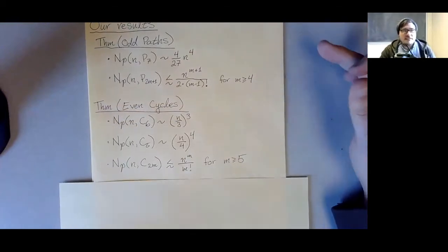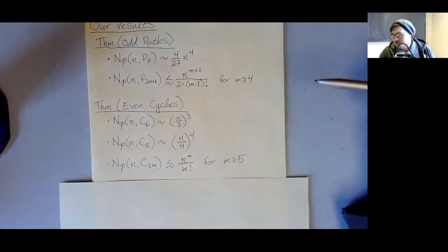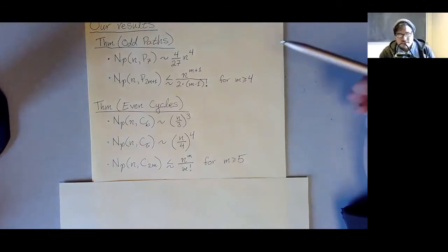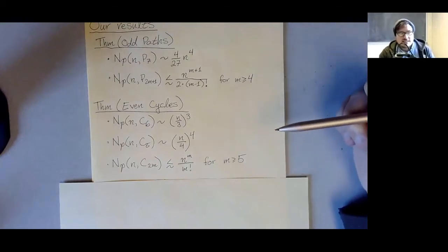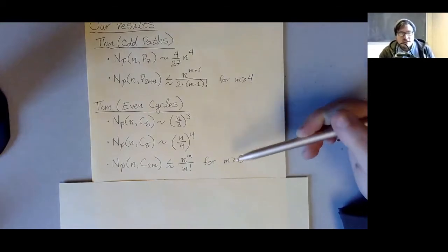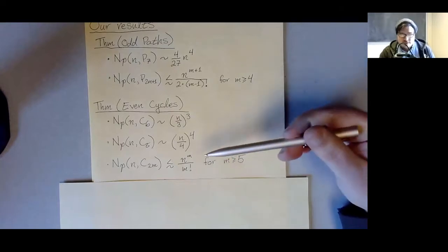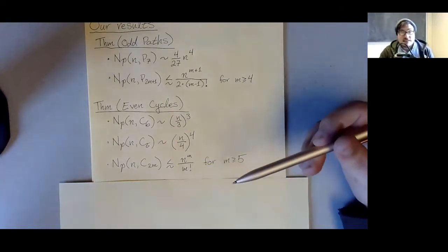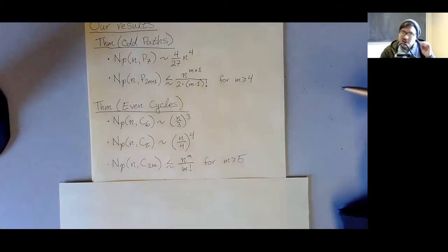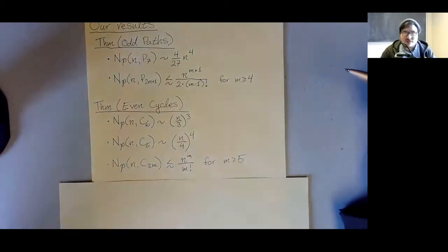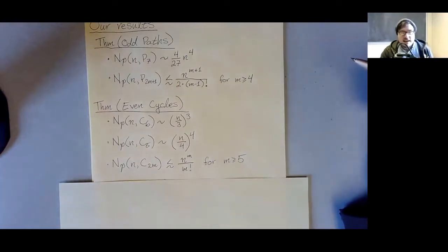When it comes to even cycles, Hakimi and Schmeichel already figured out the 4-cycle. So we figured out the next two cases: 6-cycles and 8-cycles, and significantly improved the upper bound for even cycles in general. Again, the order of magnitude of n^m is actually very simple and any of you could prove it quickly, but the constant you'd get out of a naive proof is really awful — something like 6^m probably.